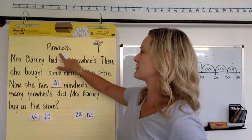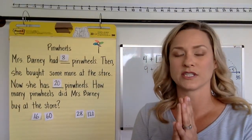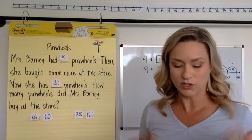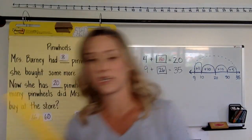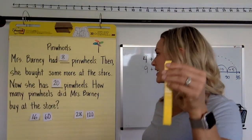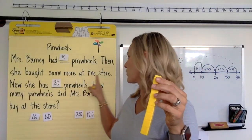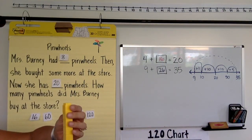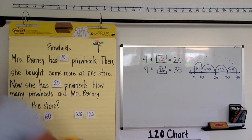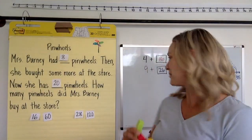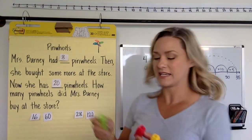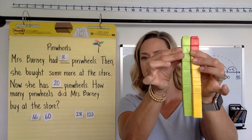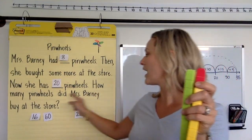So now we really have to focus in on making those connections to what's happening in the story. So Mrs. Barney had eight pinwheels. So now's the time to get your math tools. Mrs. Barney had eight pinwheels. There it is. Then she bought some more at the store. Now she has 20 pinwheels. So now she has 20 pinwheels. Sorry, I just had to jump off and get my cubes. So now she has 20 pinwheels. So this is what she had, and now she has 20. How many did she buy at the store?